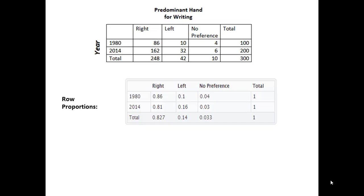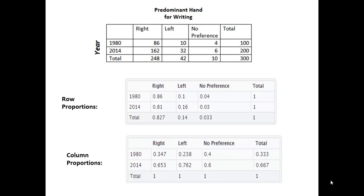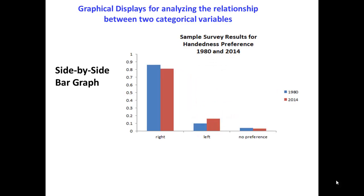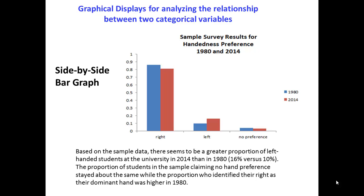Here is a chart of the row proportions and the corresponding column proportions. When looking at a single categorical variable, we used a bar chart or pie chart. Now we'll look at graphical displays for analyzing the relationship between two categorical variables. One is a side-by-side bar graph. Here at right is a side-by-side bar graph comparing the hand preferences for the two years, 1980 and 2014. Based on the sample data, there seems to be a greater proportion of left-handed students at the university in 2014 than in 1980 — 16% versus 10%.